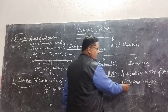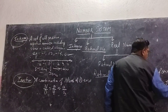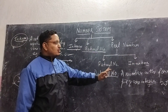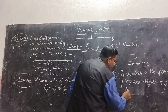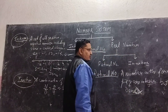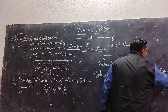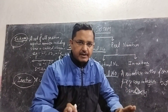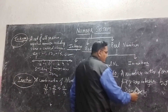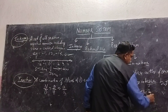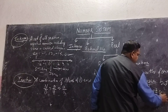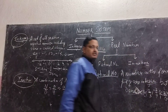A rational number is a number in the form of P by Q, where P and Q are integers, but Q is not equal to 0. Q not equal to 0 means the denominator should not be zero. P and Q can be positive or negative, but remember that Q, the denominator, should never be 0.